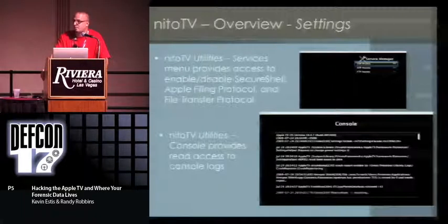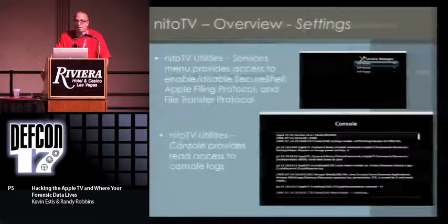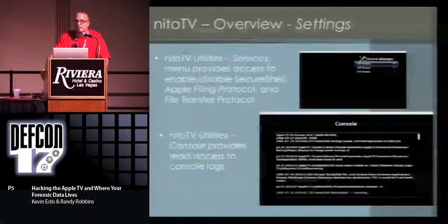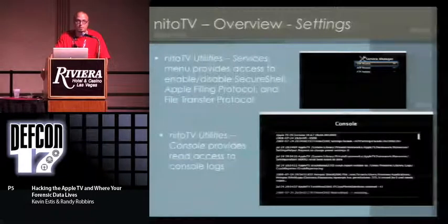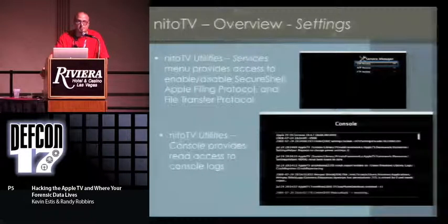I just threw a couple movies on a thumb drive and stuck it on there a little bit ago. You'll notice it automatically pulls those up. It mounts the thumb drive — you can see a little disk image and graphic of them. Right now I have it playing through something called mPlayer. Neato TV will install two different players: one is mPlayer, which is an open source media player that runs on OS X, and the other one, of course, is QuickTime.